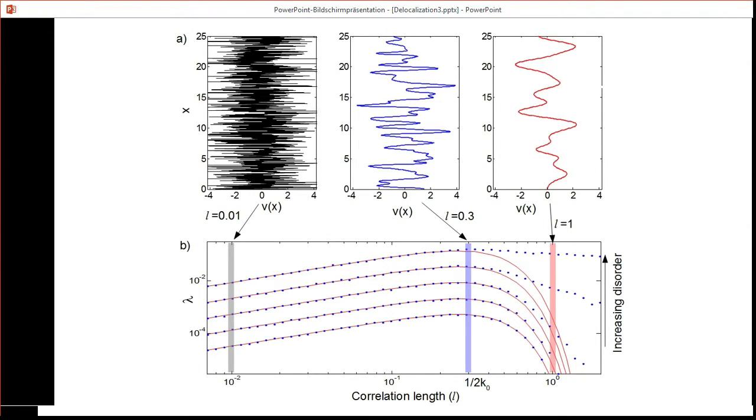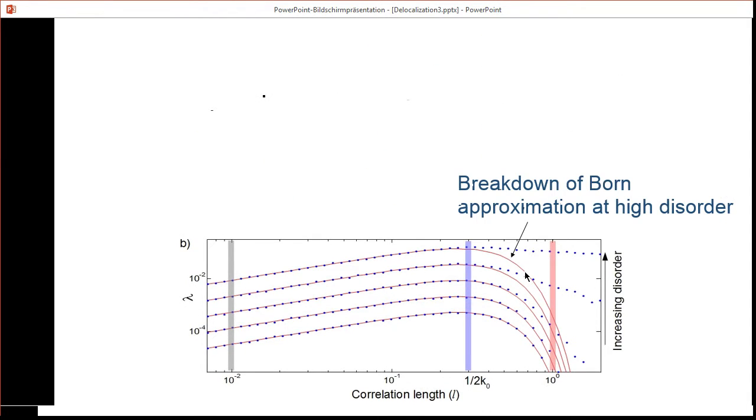This Lyapunov exponent is plotted here as a function of correlation lengths for different values of the disorder, where the blue dots are the numerically evaluated Lyapunov exponent, while the red line is the Born approximation. At higher disorder and higher correlation lengths, we see that the numerics and the Born approximation don't match anymore, and we have a breakdown of that Born approximation.